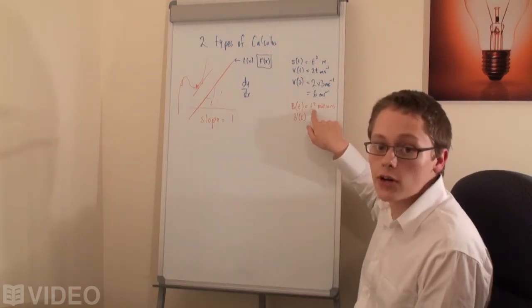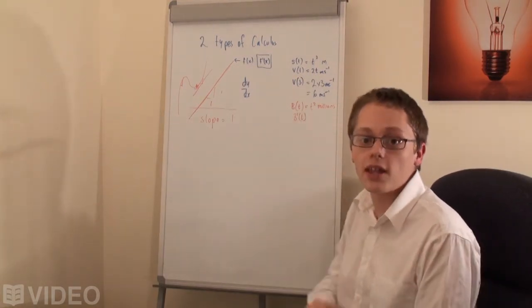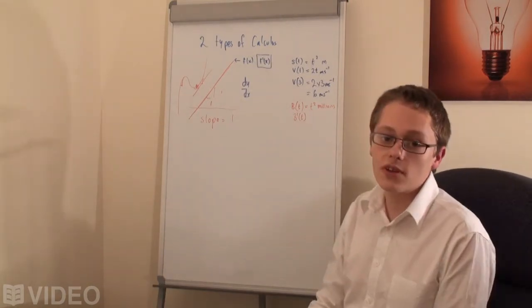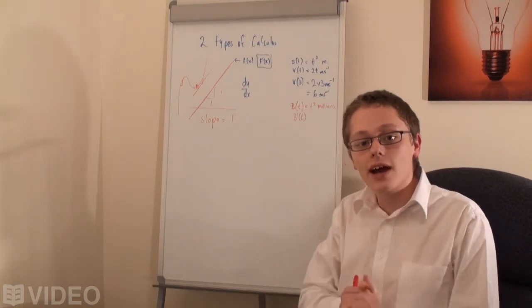And that gives us the number of bacteria on our petri dish at any given time. So, if it's one hour, we're going to have one million. At two hours, we're going to have four million, etc. But now, we want to be able to use its derivative to work out the increase per hour after three hours. So, we've let it culture.